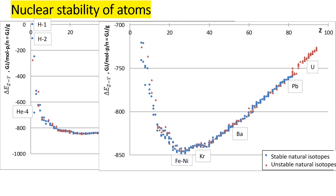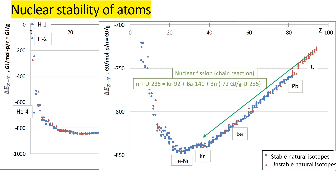Here I want to discuss not radioactive decay but rather nuclear fission. If we take isotope uranium-235 and add a neutron to it, nuclear fission can take place. For example, it forms krypton-92 and barium-141 — both very radioactive isotopes — and it also forms three neutrons.